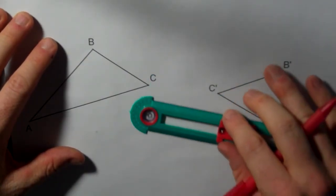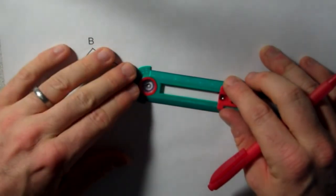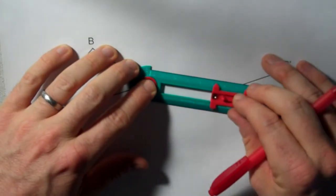So I'm going to pick C and C prime since they are pretty close together. I'm going to do my perpendicular bisector construction.